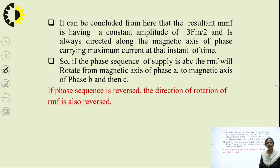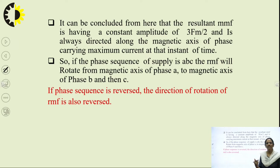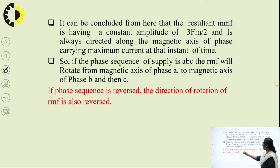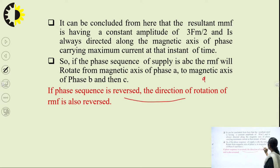If the phase sequence of the supply is ABC, the rotating magnetic field rotates from the magnetic axis of phase A to B to C. If we want to reverse the direction of rotation of the rotating magnetic field, we simply reverse the phase sequence. If the phase sequence is made ACB, the rotating magnetic field rotates in the opposite direction.